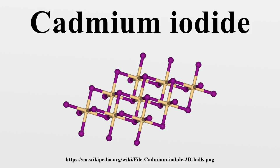Compounds with the CdI2 crystal structure include — iodides: MgI2, TiI2, VI2, MnI2, FeI2, CoI2, NiI2, PdI2, PbI2; chlorides and bromides: TiCl2, VCl2, MgBr2, TiBr2, VBr2, MnBr2, FeBr2, CoBr2; hydroxides of M2+: Mg(OH)2, Ni(OH)2, Ca(OH)2; chalcogenides of M4+: TiS2, ZrS2, SnS2, alpha-TaS2, PtS2, TiSe2, ZrSe2, SnSe2, PtSe2, SiTe2, TiTe2, CoTe2, NiTe2, PdTe2, PtTe2; others: AgF2, W2C.